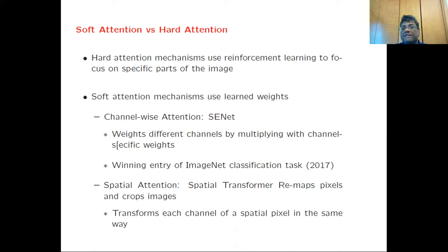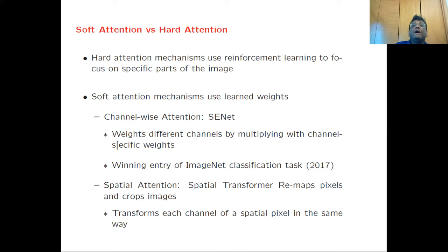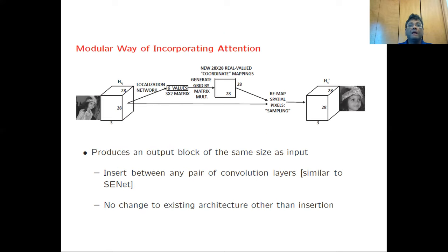In another video, I've discussed the SE-Net, which is a different method for spatial attention — specifically channel-wise attention. What it does is weight different channels by multiplying them with channel-specific weights. For example, applied to the input feature map, it would multiply the red, green, and blue channels with different weights, resulting in a new color scheme that improves classification ability. The spatial transformer is very similar to SE-Net in the sense that it is modular in nature. To relate what I'm discussing here to SE-Net, you may want to watch that other video.